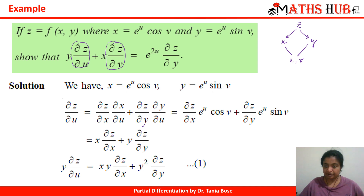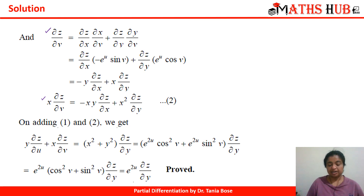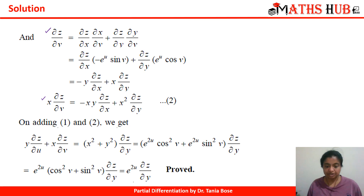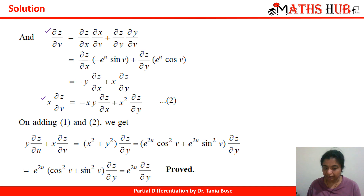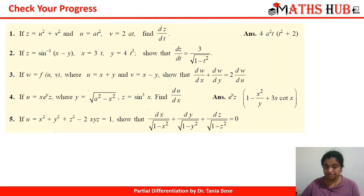Next we calculate ∂z/∂v using the same definition of total derivative and multiply by x. When we add the two equations, the middle terms containing xy cancel, leaving (x² + y²)·(∂z/∂y). Substituting x and y in terms of u and v, we see that e^{2u} can be factored out, and we are left with sin²(v) + cos²(v) = 1, giving the right-hand side e^{2u}·(∂z/∂y), which proves the result.